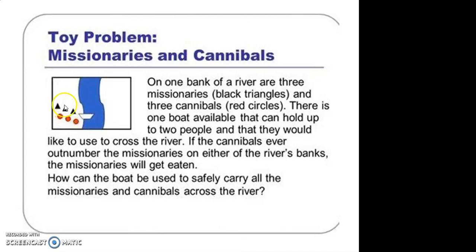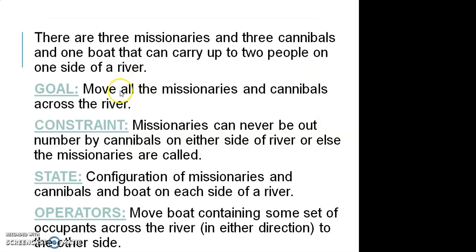We have to ensure that at any time on the left or the right side of the bank, the number of missionaries is never less than the number of cannibals. With this condition, we have to make all of them cross the river. The goal is to move all the missionaries and cannibals across the river. The constraint is that the cannibals can never outnumber the number of missionaries on either side.